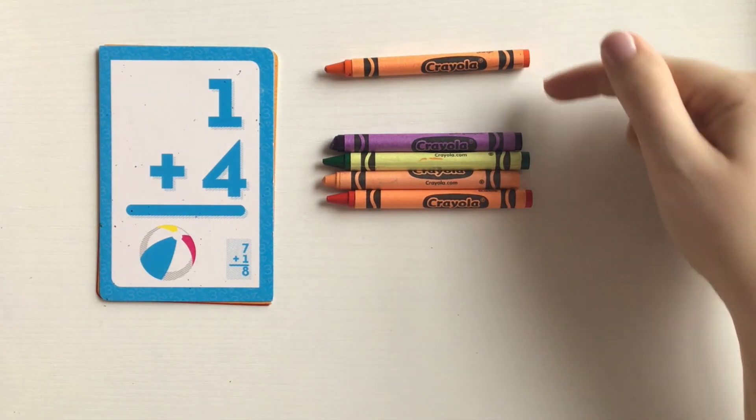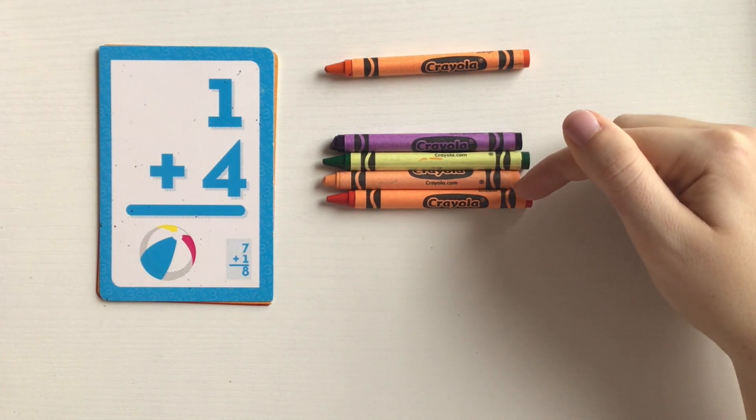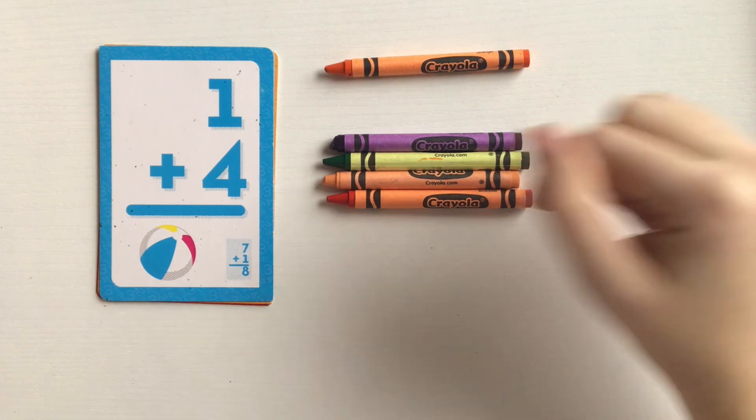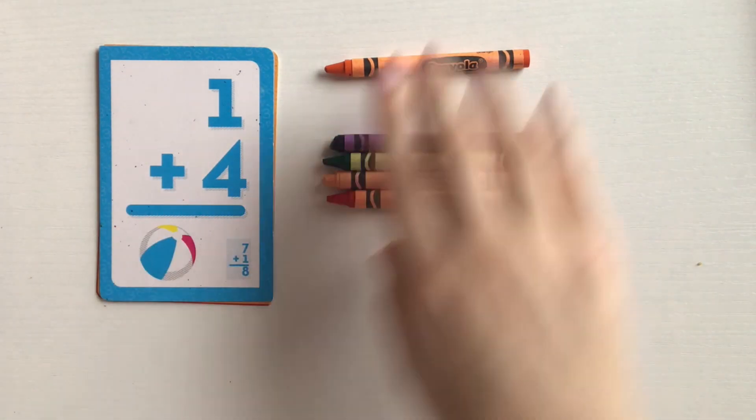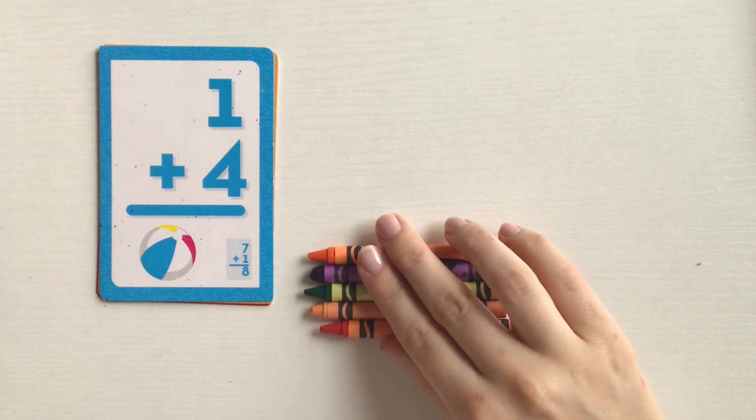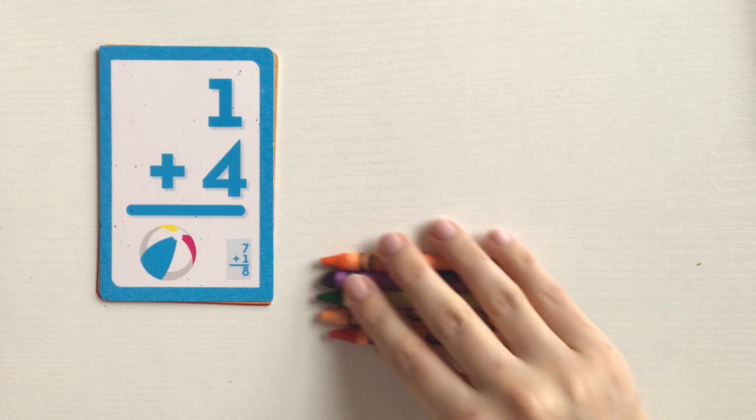One, two, three, four, five. One, two, three, four, five. One plus four equals five. Let's do the next problem.